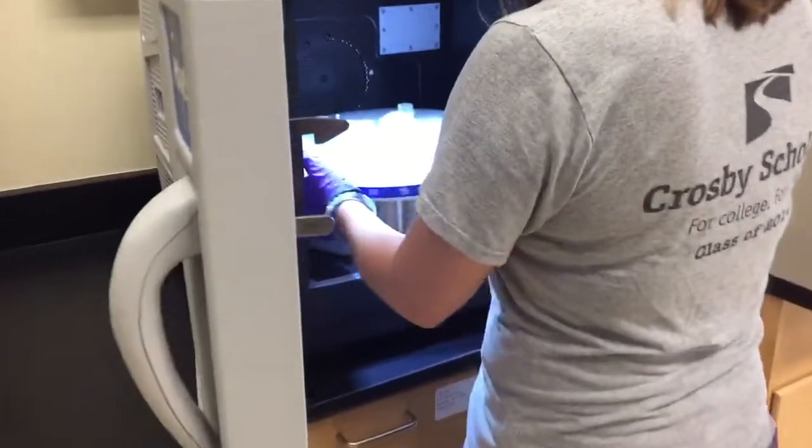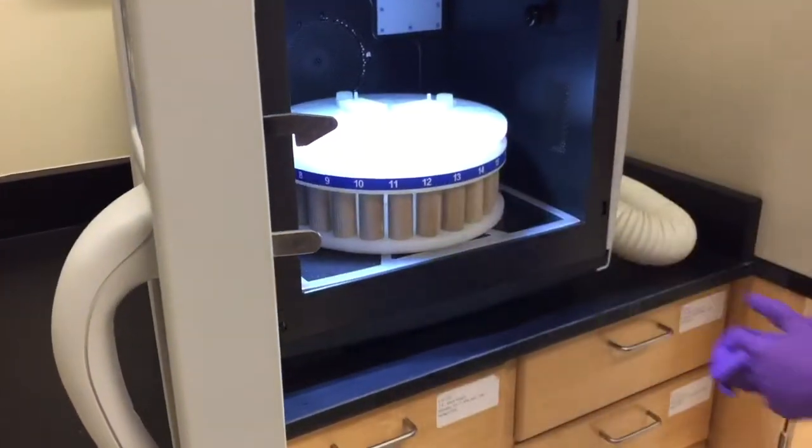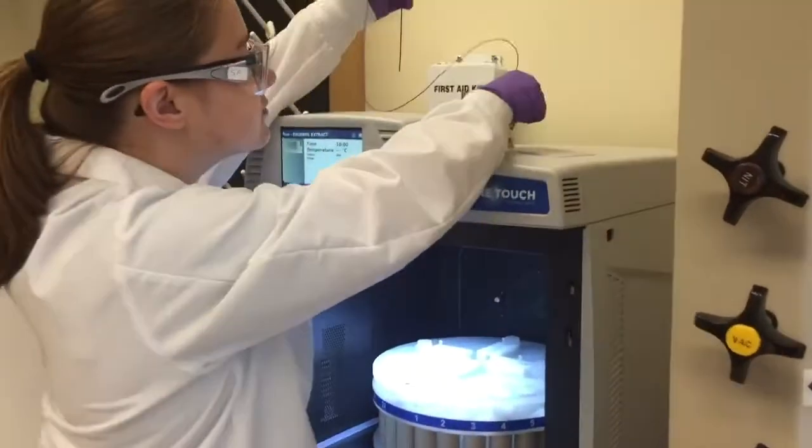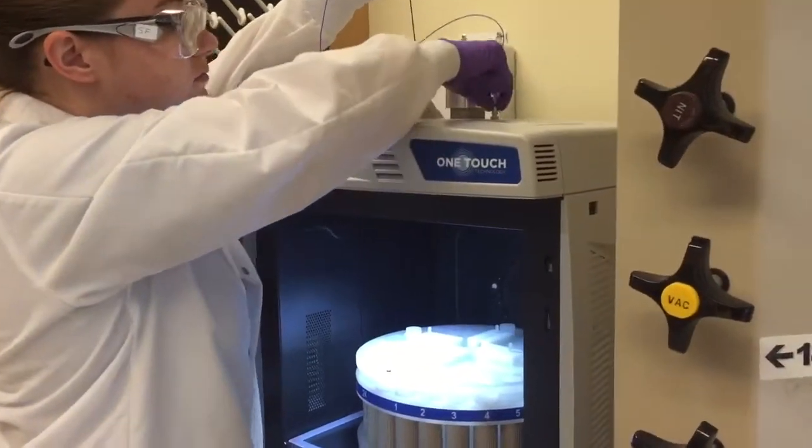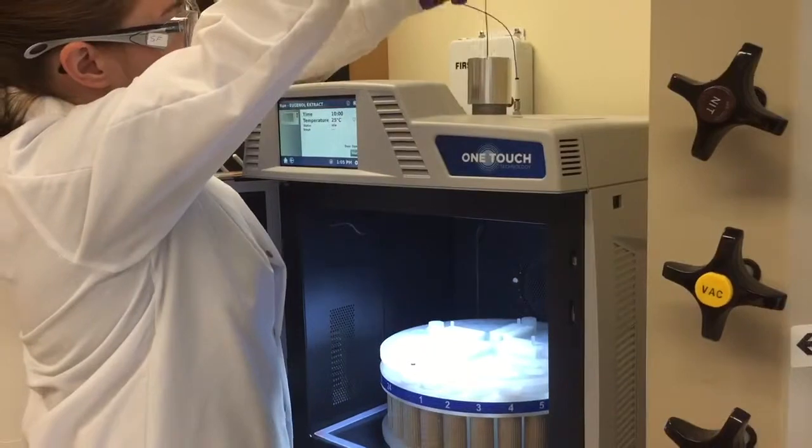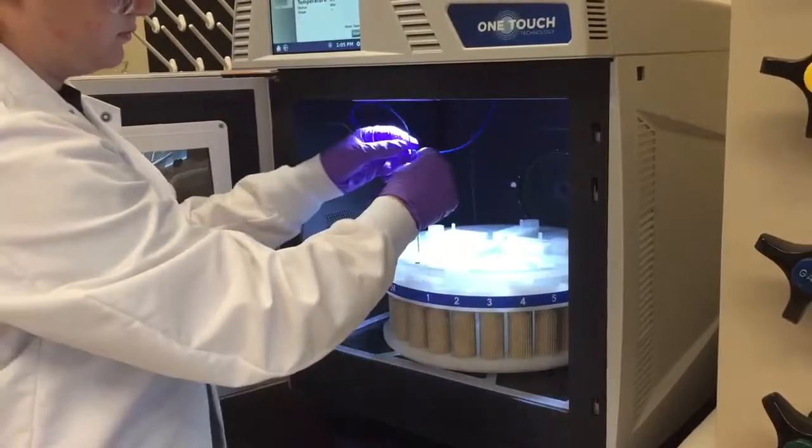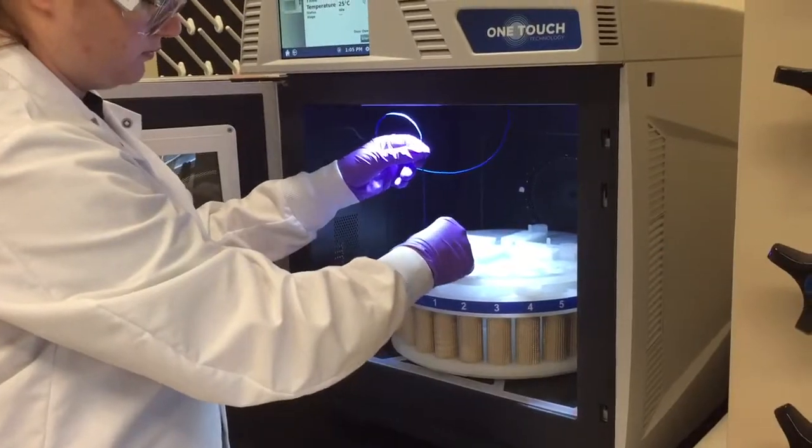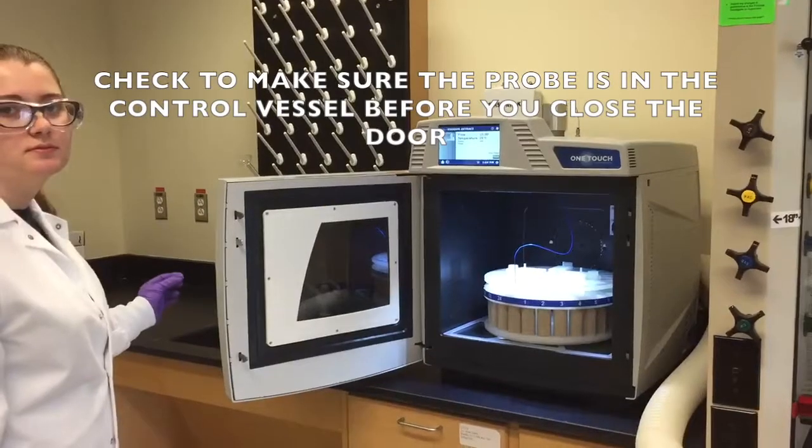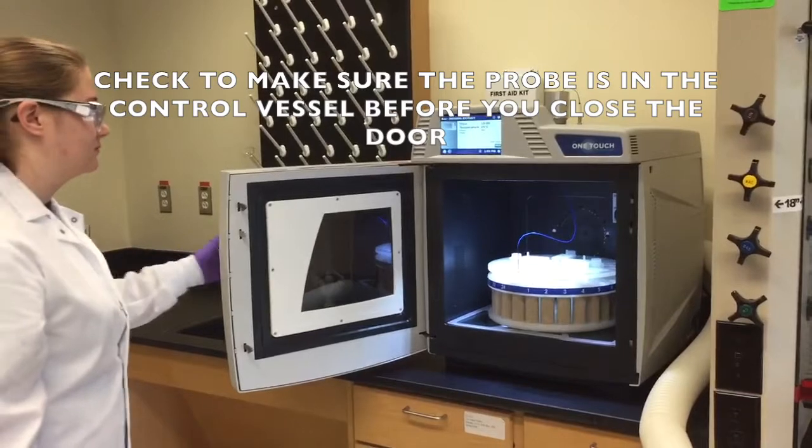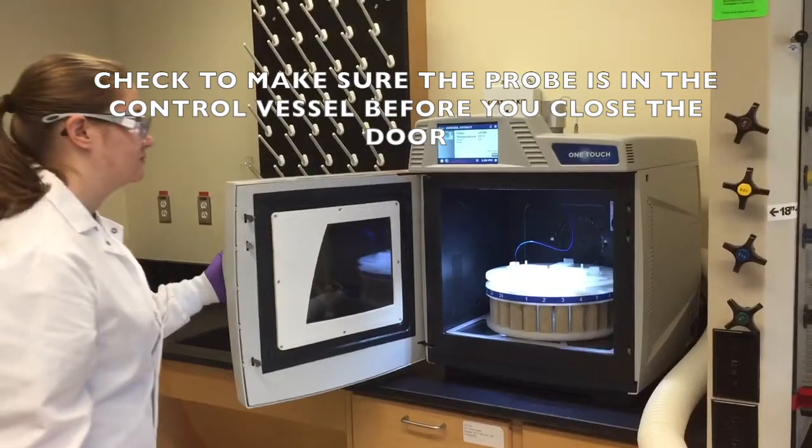Once it is properly seated, the turntable should not rotate. Slide the probe through the opening at the top of the microwave and insert the end into the thermal well nut on top of the control vessel. Check to make sure that the probe is not crimped, because the probe might break. Make sure that when you close the door of the microwave, the probe is inserted in the control vessel.